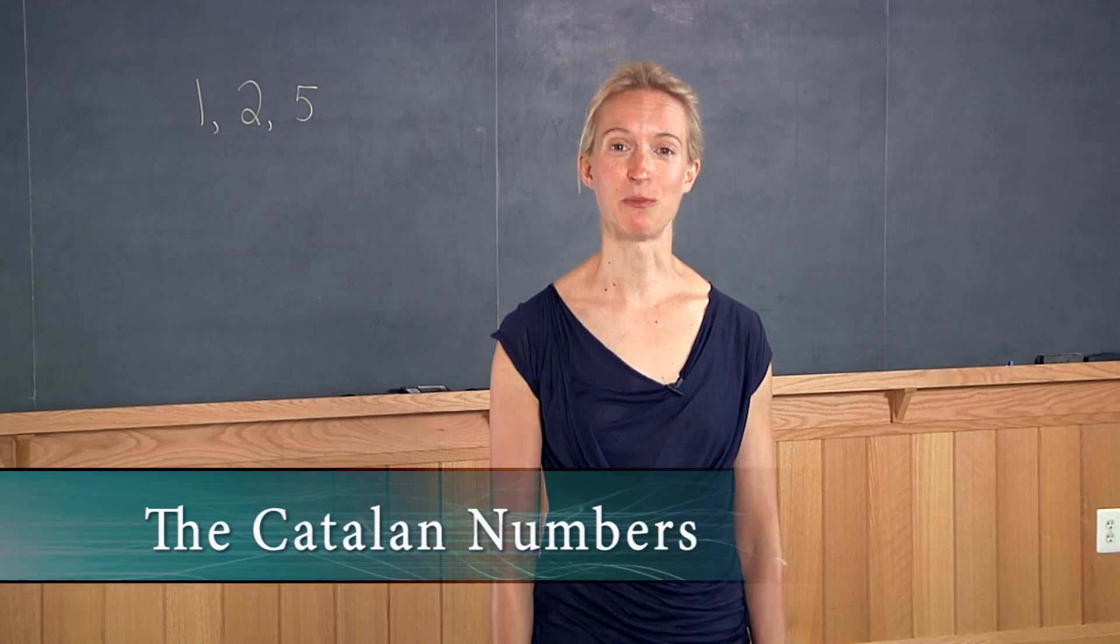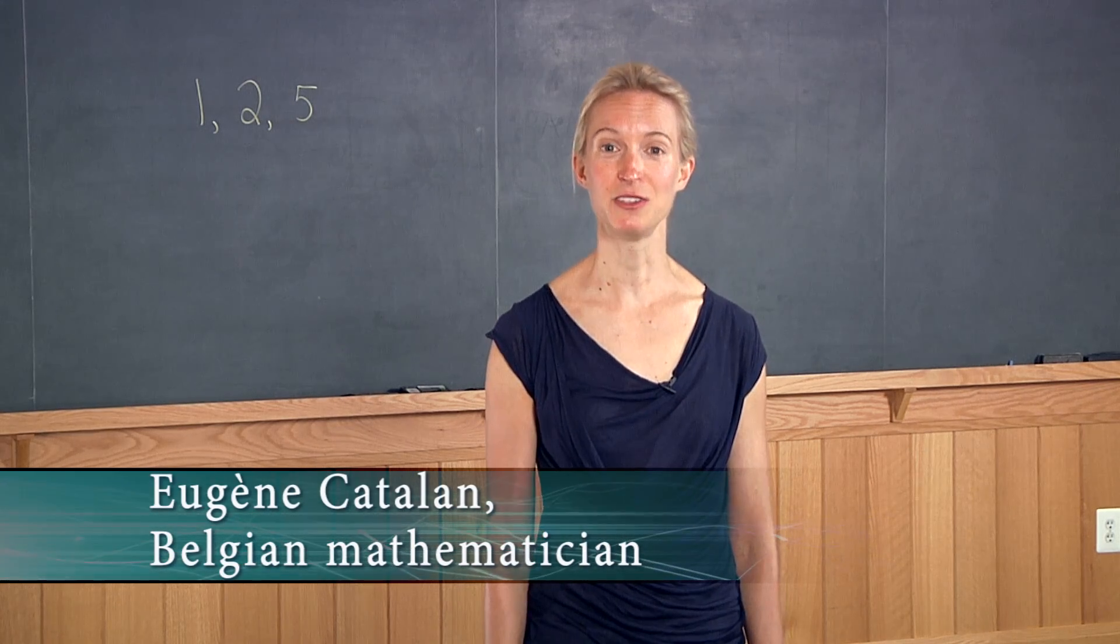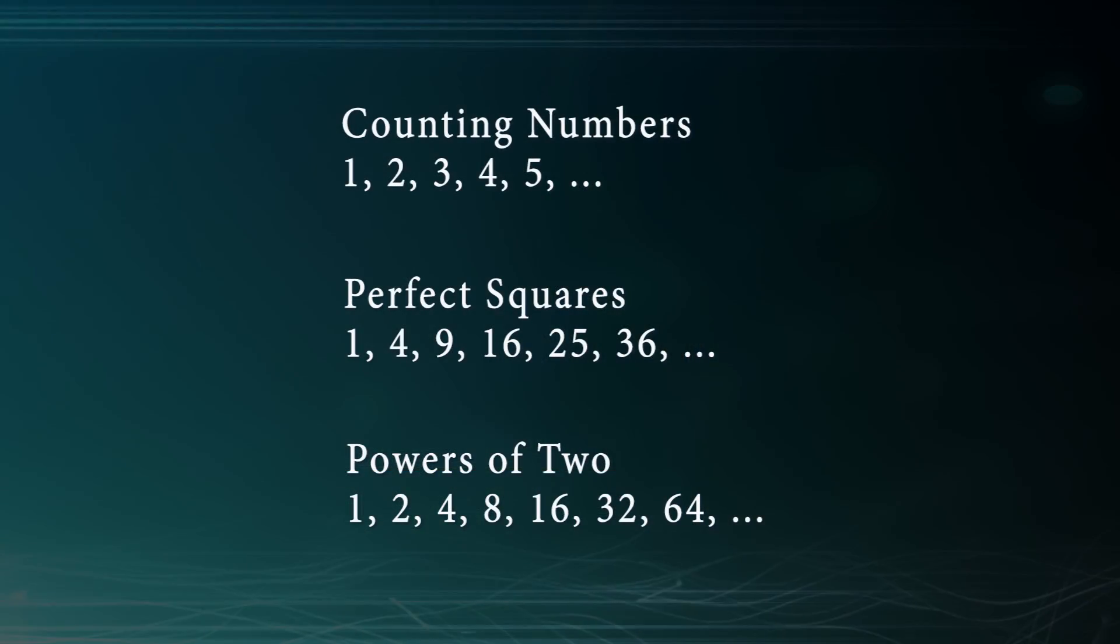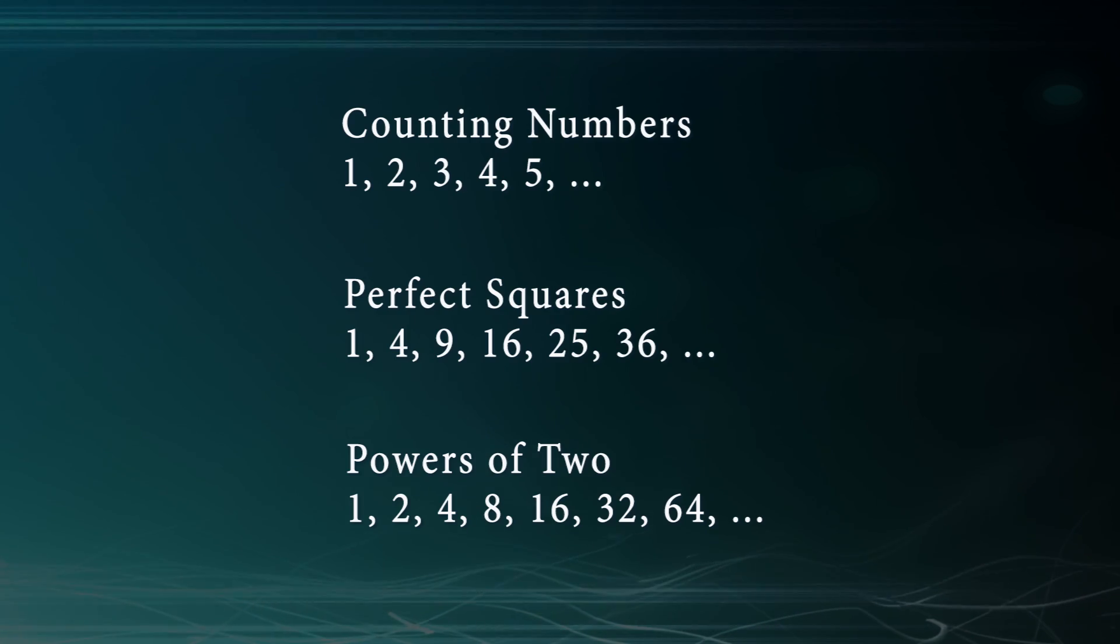They're called the Catalan numbers, again after the 19th century Belgian mathematician Eugene Catalan. These numbers are an infinite list, just like all of the examples that we talked about at the beginning.